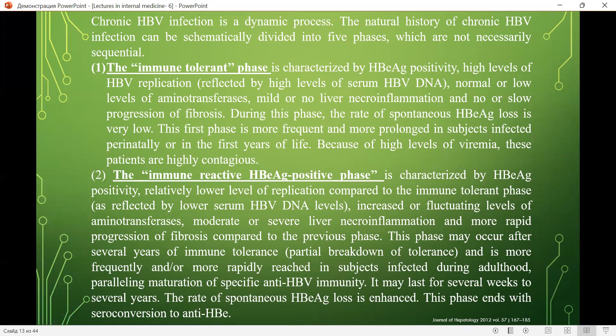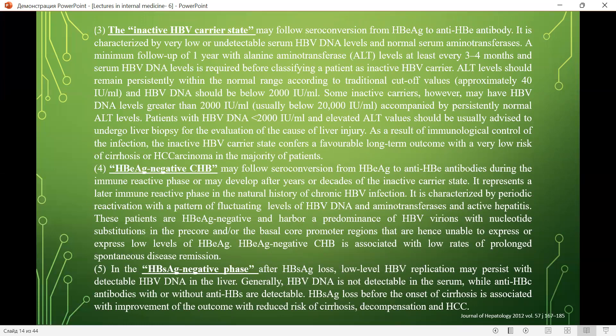This phase may last from several weeks to several years; the rate of spontaneous HBe antigen loss is enhanced. This phase ends with seroconversion to anti-HBe. The third phase — the inactive HBV carrier state — may follow seroconversion from HBe antigen to anti-HBe antibody. It is characterized by very low or undetectable serum HBV DNA and normal serum aminotransferases. A minimum follow-up of one year with ALT levels measured at least every 3–4 months and serum HBV DNA is required before classifying a patient as an inactive HBV carrier.